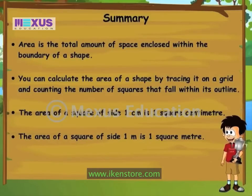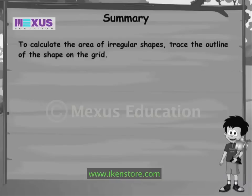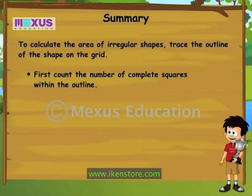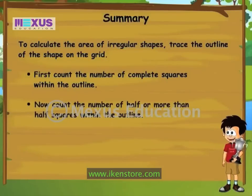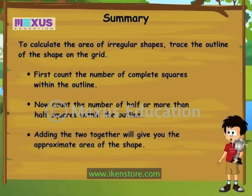The area of a square of side one meter is one square meter. Sometimes you might want to calculate the area of irregular shapes like a leaf or a coin. To calculate the area of such irregular shapes, trace the outline of the shape on the grid. First count the number of complete squares within the outline. Now count the number of half or more than half squares within the outline. Adding the two together will give you the approximate area of the shape.